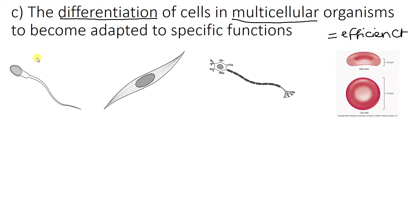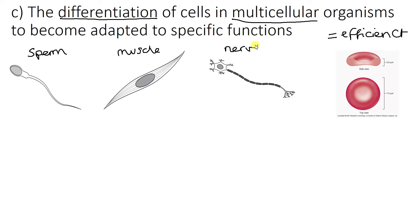Some of the different types of cells that have become specialised to functions are some of these here. This one on the left is called a sperm cell. Next to that is a muscle cell, a type of muscle cell. Over here is a type of nerve cell, so in your brain. And over here, you've probably seen this one multiple times — it is a red blood cell.